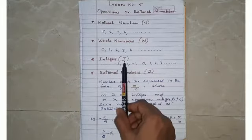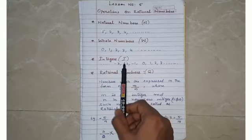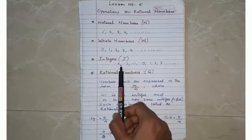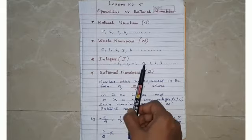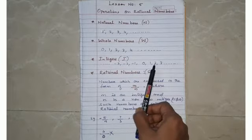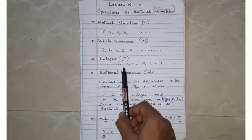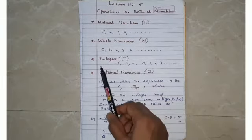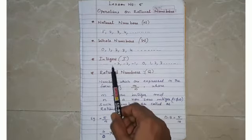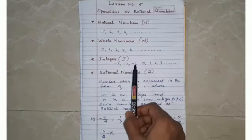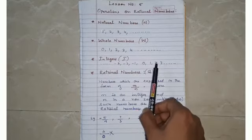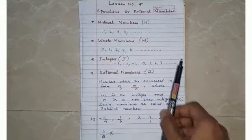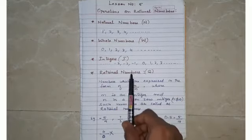The next set of numbers are integers. Integers are represented as capital I and they include negative integers, zero, and positive integers. You can see here: ...−3, −2, −1, 0, 1, 2, 3... and the dots mean we don't know where they are ending.